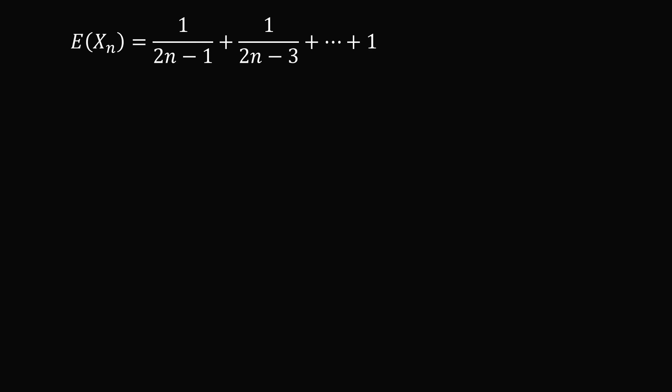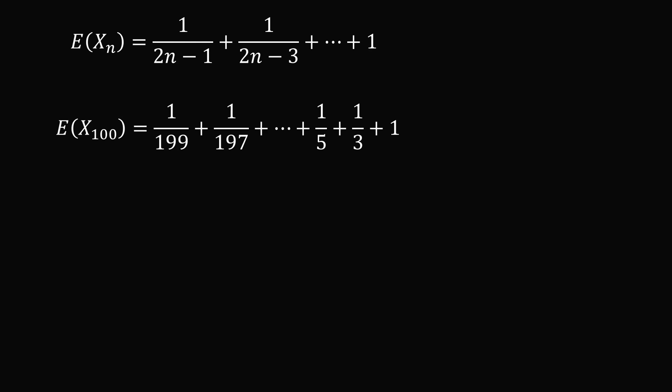All that remains is to apply the formula to n equals 100. The expected number of loops for 100 noodles is 1/199 plus 1/197 plus ... and so on, which is approximately equal to 3.28 loops. I think it's pretty interesting that when you start with 100 noodles, you're only going to end up with about three different loops — so there are going to be some pretty long loops. This is an unexpected result.